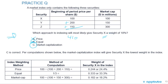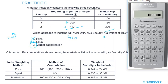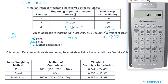To confirm: market capitalization weighting gives a total cap of 100 plus 150 plus 300 equals 550 million. Security X's weight is 100 divided by 550 = 18.18%, which is closest to 18%. The correct answer is C, market capitalization weighted. That's the last slide for this LOS.